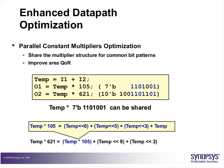One example unique to DC is that it utilizes resource sharing for parallel constant multipliers. For example: temp = I1+I2, O1 = temp*105, O2 = temp*625. The binary codes for 105 and 625 are examined. DC sees that temp*7 can be shared between the two constants. So the implementation is not two multipliers — the multiplier is implemented using shift-and-add operations.